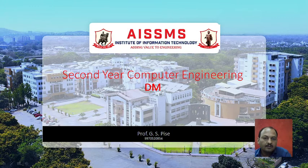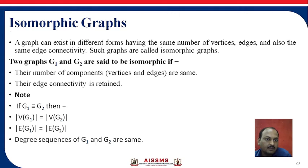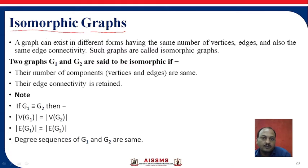Hello students. Today we are going to see one more point from unit number 4. The unit name is graph theory. The point is isomorphic graph. This is one of the most important topics, and most of the time they ask questions in university exams whether a given graph is an isomorphic graph or not. They give different types of graphs and ask which graph is isomorphic and which is not. First of all, we will see the definition of isomorphic graph.